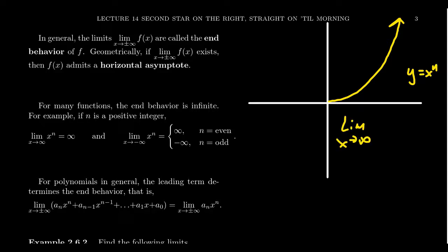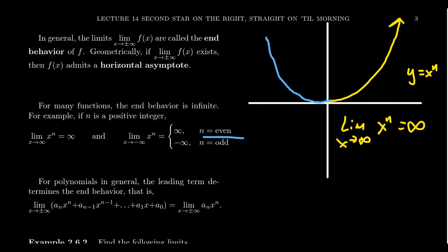For these monomial functions Y equals X to the n, if we take the limit as X approaches infinity, then X to the n will become infinity as well. This makes sense: if you take a big number and raise it to a positive exponent, the number gets even bigger — assuming the exponent is greater than 1, which for positive integers is always the case. So taking powers of big numbers makes them even bigger, and thus as X gets closer and closer to infinity, X to the n likewise gets closer to infinity. On the left-hand side, behavior depends on the parity — whether it's an even or odd power. If you have an even power, the graph is an even function, symmetric with respect to the Y-axis.